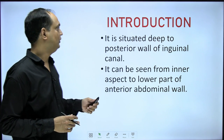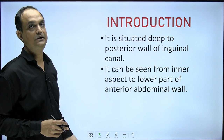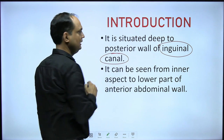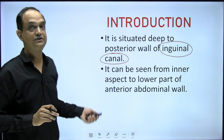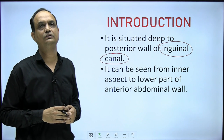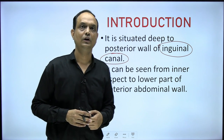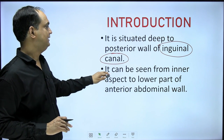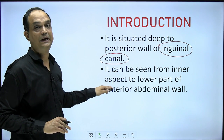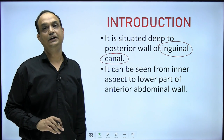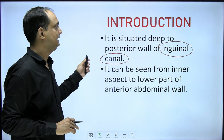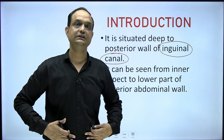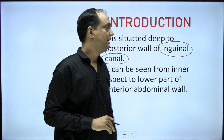This triangle is situated deep to the posterior wall of the inguinal canal. You will not find Hesselbach's triangle on the anterior surface of the anterior abdominal wall — you have to go to the posterior side. It can be seen from the inner aspect only of the lower part of the anterior abdominal wall; it is a feature of the posterior aspect.